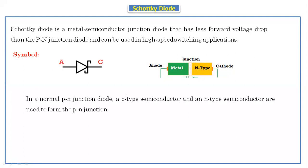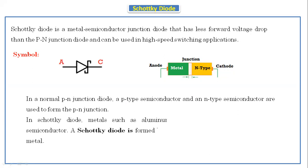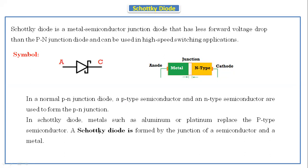In a normal PN junction diode, a P-type semiconductor and an N-type semiconductor are used to form the PN junction diode. But in the case of the Schottky diode, a metal such as aluminum or platinum replaces the P-type semiconductor. A Schottky diode is formed by a junction of a semiconductor and a metal — it is a combination of metal and N-type only. That is the difference between a PN junction diode and a Schottky diode.